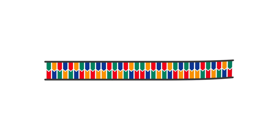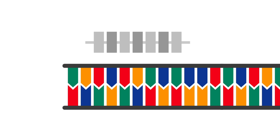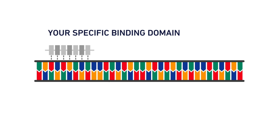The GeneArt Precision TAL effectors are made up of two parts. One part binds the DNA, and you can design that to recognize just about any sequence you want. This binding part consists of 18 or 24 repeat modules. Each repeat is responsible for binding a specific base in the DNA, and the repeats are not thought to interfere with each other. That allows us to engineer these molecules to bind any stretch of the DNA that you desire.